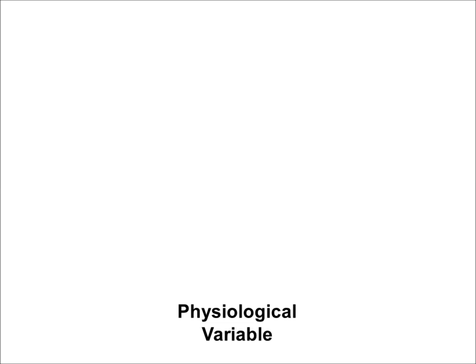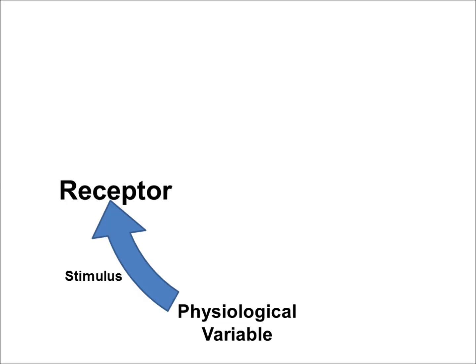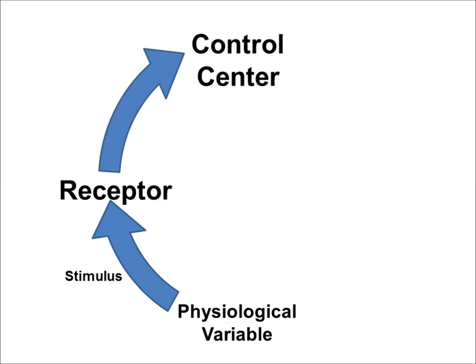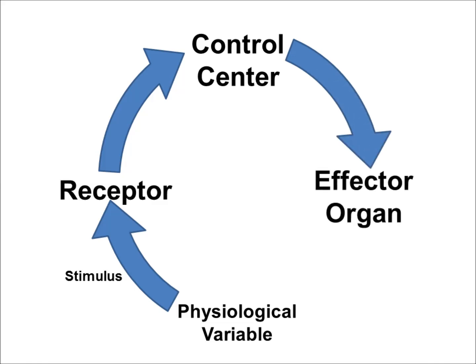We have our physiological variable, and it's going to change. That initial change is called the stimulus. The stimulus is detected by a receptor in the body. The receptor is then going to communicate with a control center. The control center is going to communicate with an effector organ, and the effector organ is going to produce an effect — an effect that results in a change in that same physiological variable we started with. And that change in that variable is called the response. This is a nice, simple diagram that you can use to visualize feedback loops.